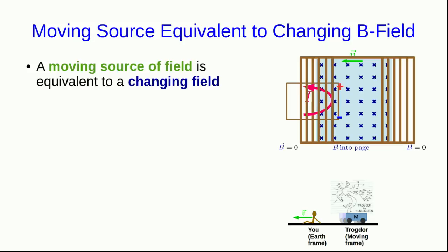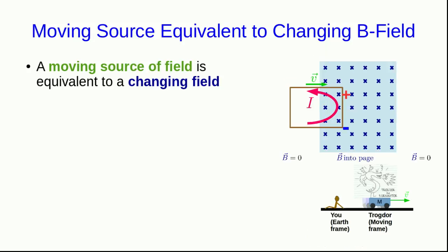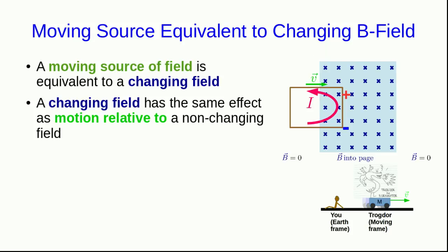These will have totally equivalent effects. And so a moving source of field is equivalent to a changing field. But we also know that we get exactly the same effect if the field itself is not changing, but we move the loop. And so a changing field has the same effect as motion relative to a non-changing field.